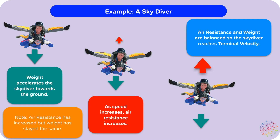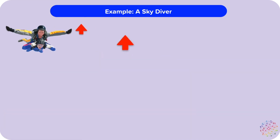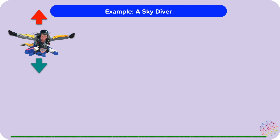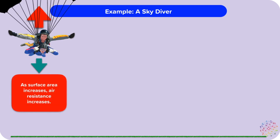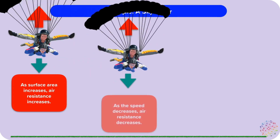Now our skydiver is falling down towards the ground at a constant speed. If they hit the ground at this speed, it would be very dangerous and they probably won't survive. So they open their parachute. Opening the parachute increases their surface area — parachutes have a huge surface area, and that increases the air resistance acting on them, because they're hitting more air particles as they fall. We now have a large resultant force upwards, so the skydiver is going to slow down. They're still falling downwards, but at a slower speed. As their speed decreases, their air resistance decreases, so they're still slowing down, but by less and less.